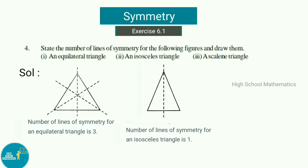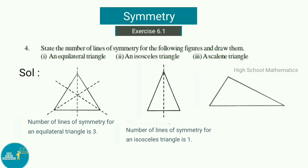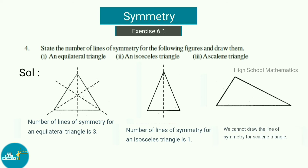The third figure is a scalene triangle. We cannot draw a line of symmetry for a scalene triangle; therefore, the number of lines of symmetry for a scalene triangle is zero.